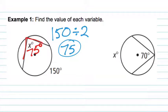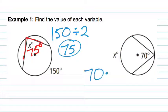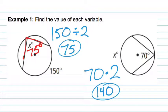In the other example, we have 70 as the inscribed angle, meaning the arc is going to be double that value. So 70 times 2 is 140, and that is the value of the arc represented by x.